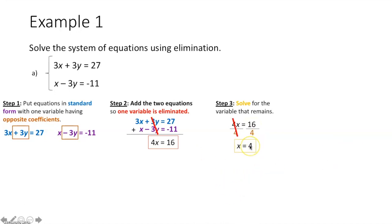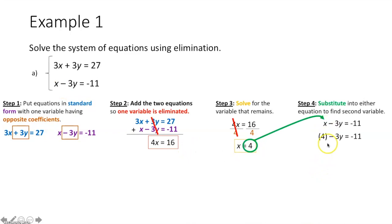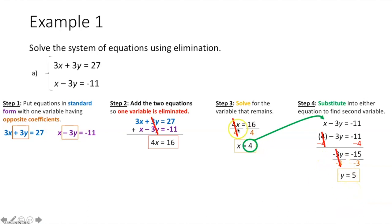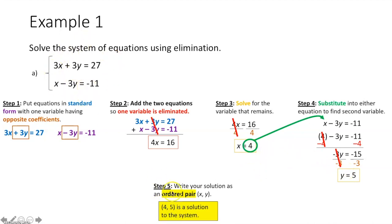Step 4: plug x = 4 into the simpler equation to solve for y. Substituting, we get 4 plus 3y = negative 11. Subtract 4 from both sides — negative 11 minus 4 equals negative 15. Then divide both sides by negative 3, and y = 5. Step 5: write the ordered pair. The solution is (4, 5). Always check by plugging 4 in for x and 5 in for y in both equations to confirm both sides are equal.